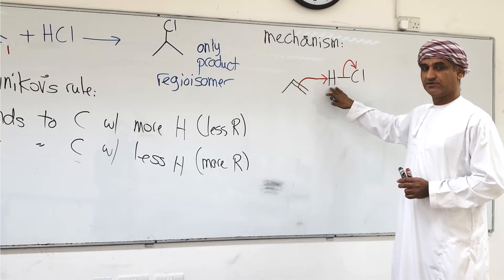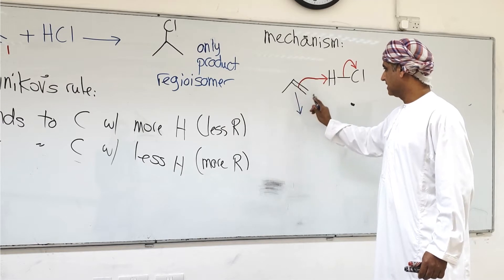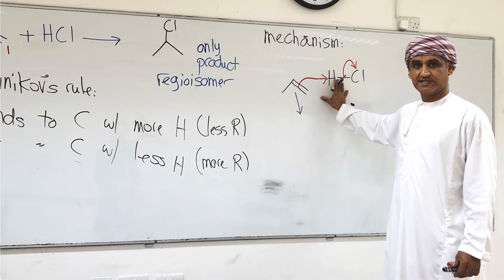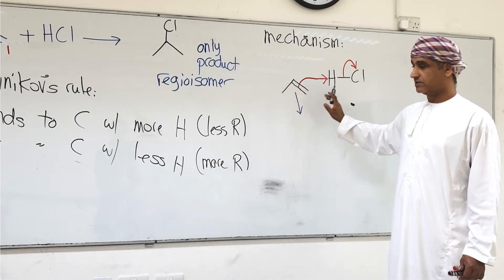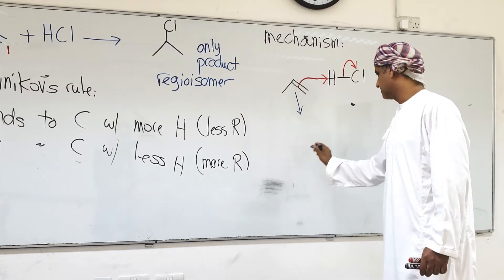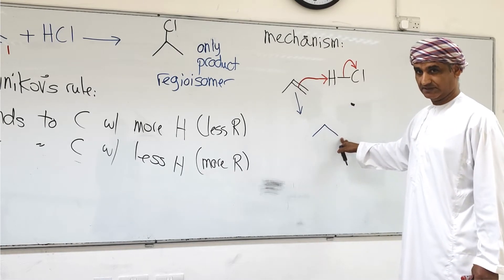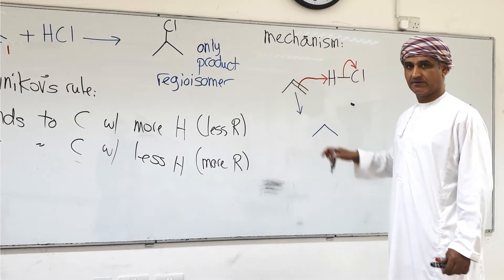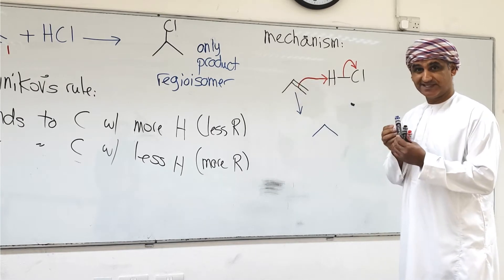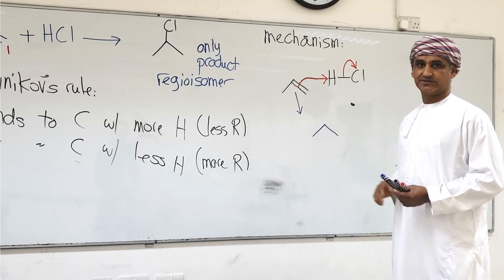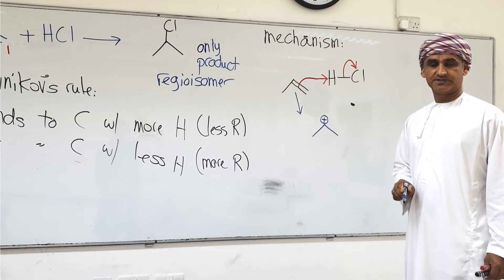As the carbon-carbon pi bond is broken, a new carbon-hydrogen bond is formed, and simultaneously the hydrogen-chlorine bond is broken. A key question is: which of the two carbon atoms does hydrogen bond to? According to Markovnikov's rule, hydrogen bonds to carbon one. If that's the case, the other carbon — carbon two — which previously had two hydrogens, now has three. Carbon two would have lost its electron share when the pi bond broke.